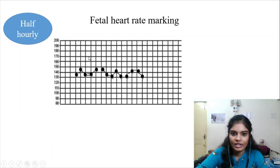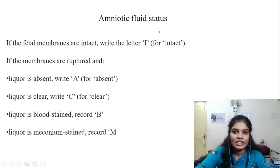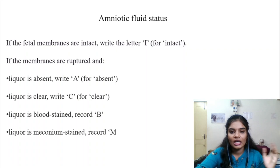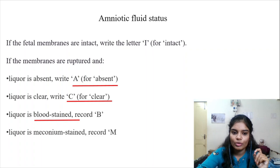Fetal heart rate is marked with dots every half hour. Normal baseline is 110 to 160. Below 110 is fetal bradycardia; above 160 is fetal tachycardia. For amniotic fluid status during PV examination: if membranes are intact, write I. If ruptured and liquor is absent, write A; if clear, C; if blood-stained, P; if meconium-stained, M.